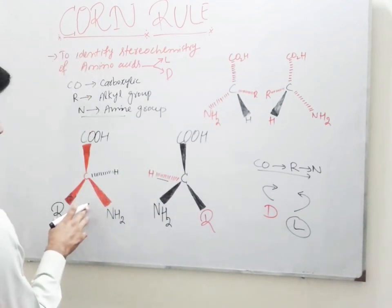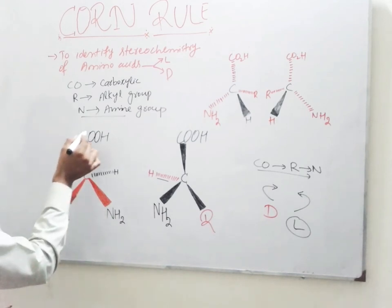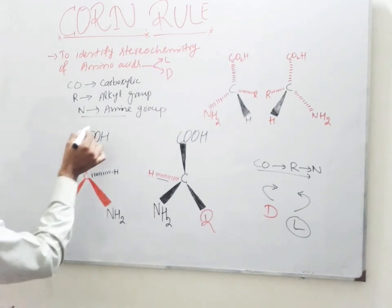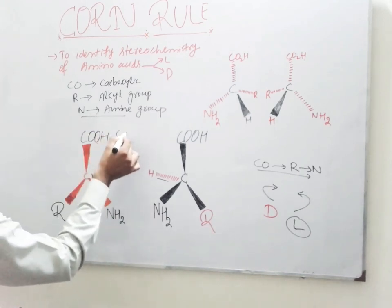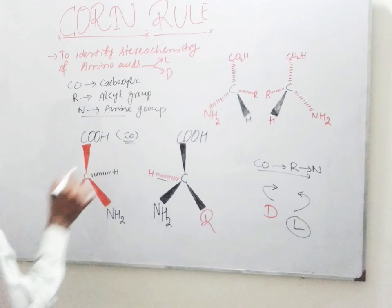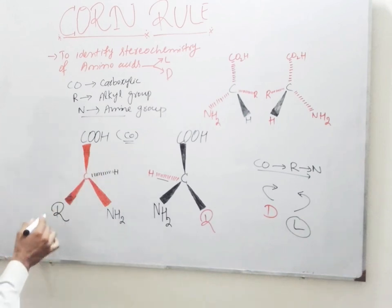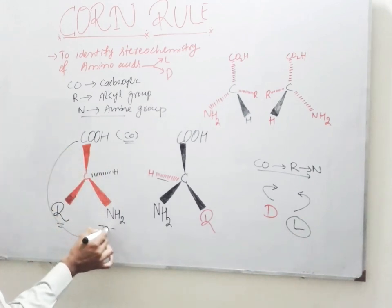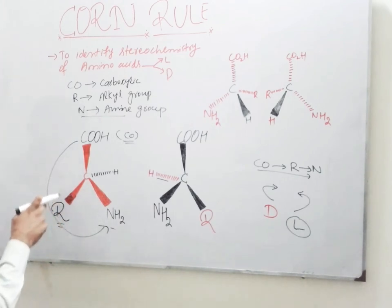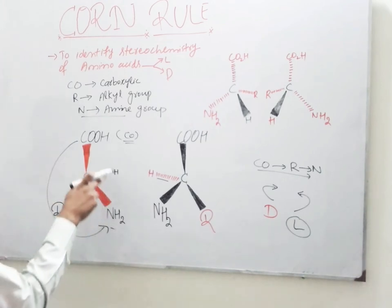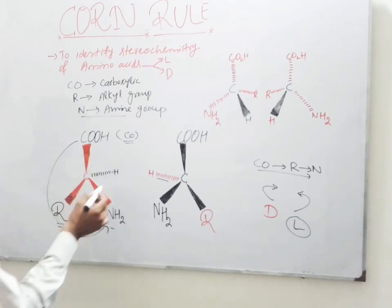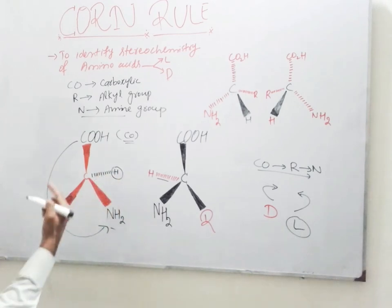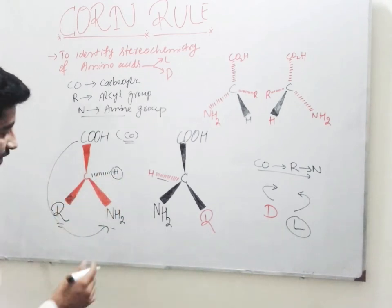In this molecule we can see that C is our acronym for carboxyl group, R for alkyl group, and N for amine group. We do rotation in the direction of CON, and the rotation is anticlockwise, and our hydrogen is directed away from the observer.